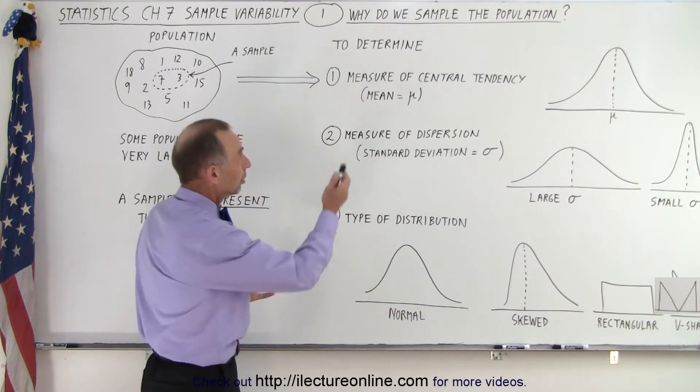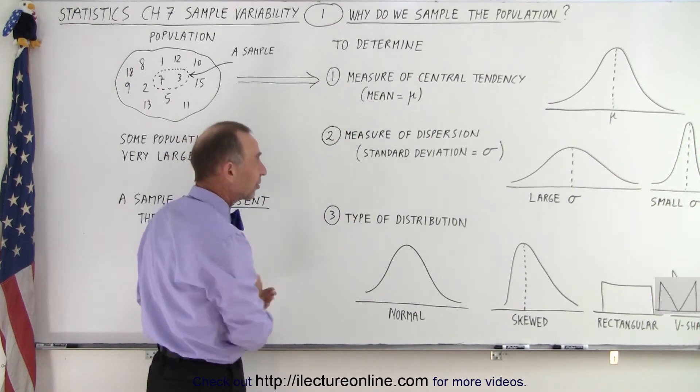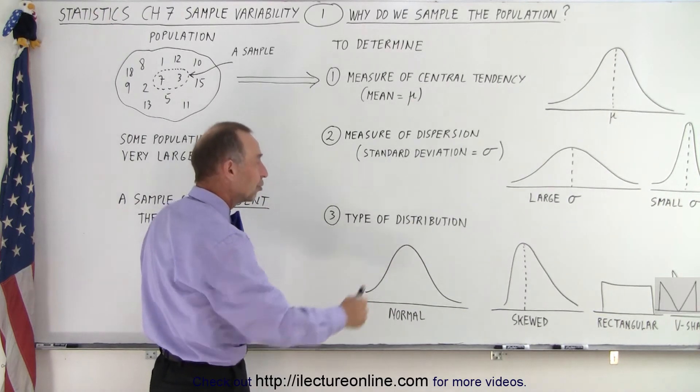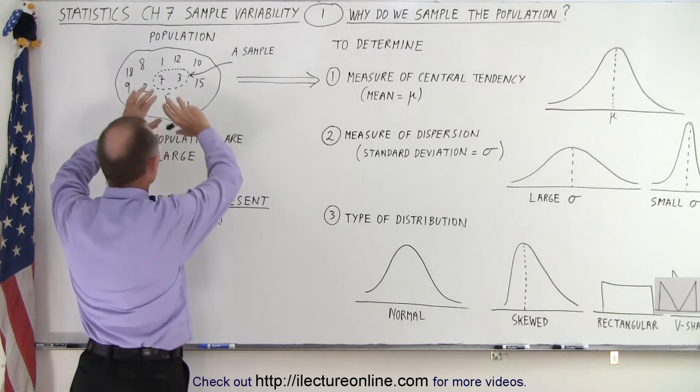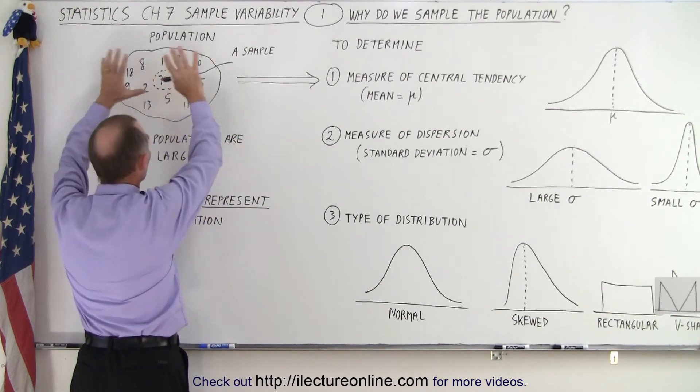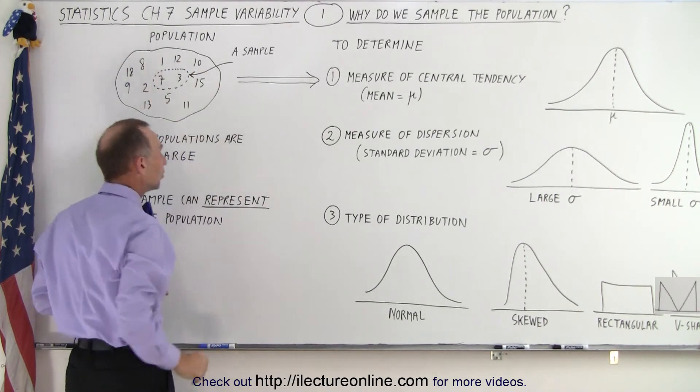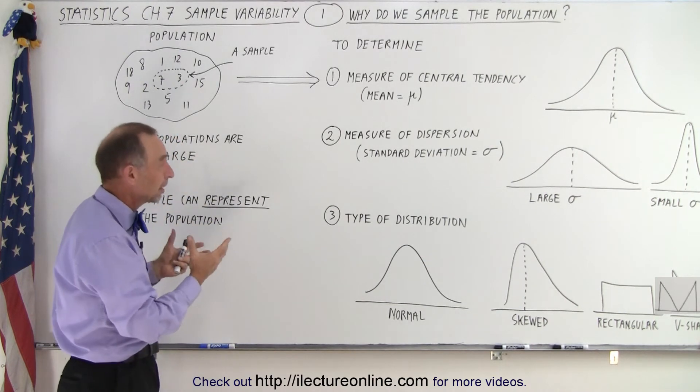So we want to measure the central tendency, which is the mean. We want to find the standard deviation, known as the measure of dispersion. And we want to know what kind of distribution we're dealing with. All that can be determined by taking a relatively small sample of a large population. In this case we see that the sample size is 2 out of a large set of numbers, and that small set of 2 could represent the total population.